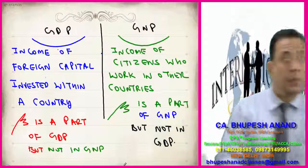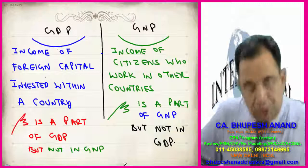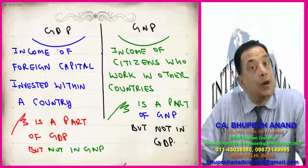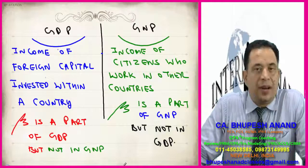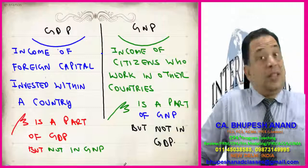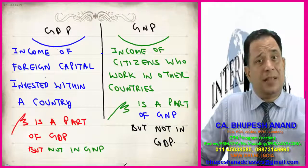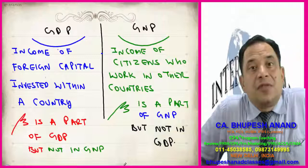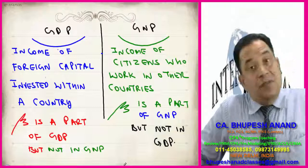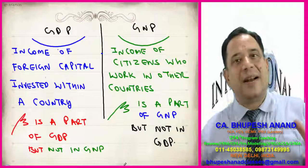Let's see the difference — I have prepared a table, please prepare it the same way. In GDP: the income of foreign capital invested within a country is a part of GDP but not of GNP. Because in GDP we are mainly concerned with domestic boundaries — anything produced or served within the domestic boundaries is part of GDP. In GNP, income of citizens and capital of India who work in other countries is part of GNP but not GDP, because they are not working within the boundaries of the country. So GNP and GDP are two separate aspects.